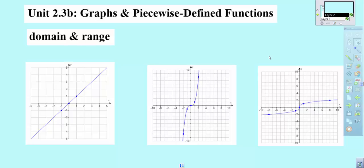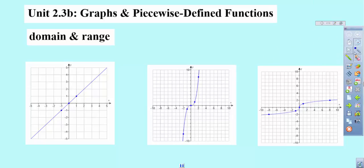We're going to take a look at different types of graphs, their domain and range, and then how we can actually verify some of this stuff on our graphing calculator to start using it to define characteristics of things without having to graph by hand. We're going to run through and talk about what would be considered the parent functions.